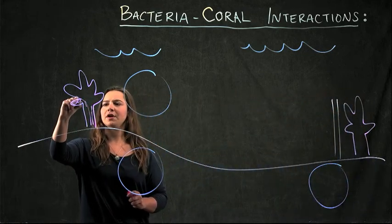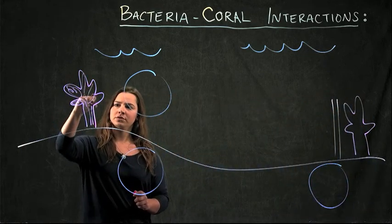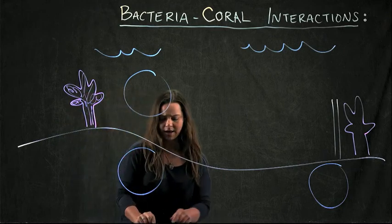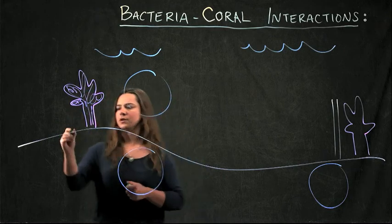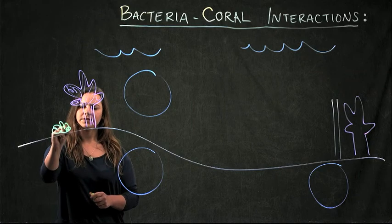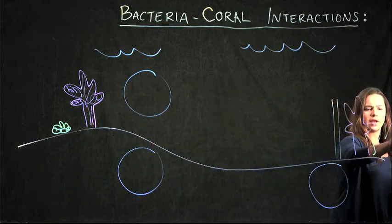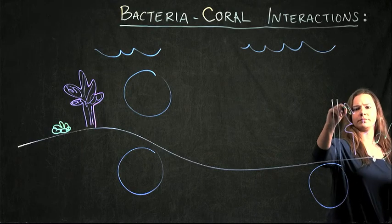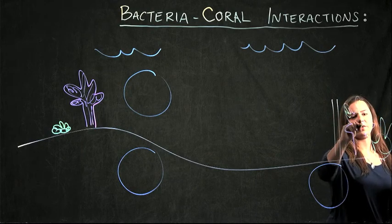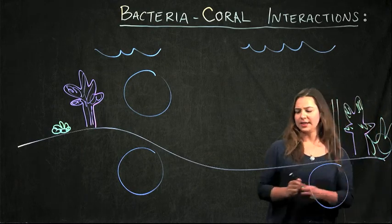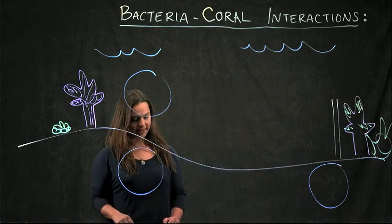here's a happy, colorful coral, and decreased coral survivability. So here's a little bit of algae, and here's an algal overgrowth. And it grows on the coral and leads to coral mortality.